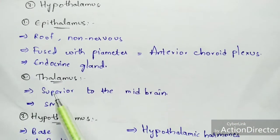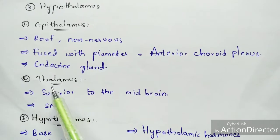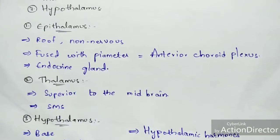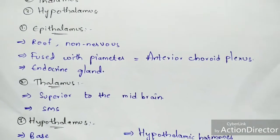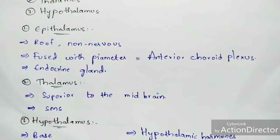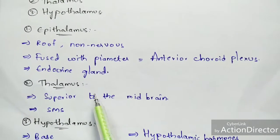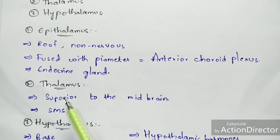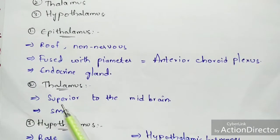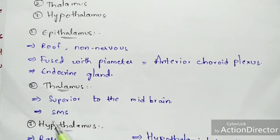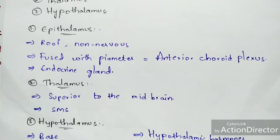The thalamus region is superior to the midbrain. Its major function is to act as a coordinating center for SMS — that is, sensory and motor signaling.